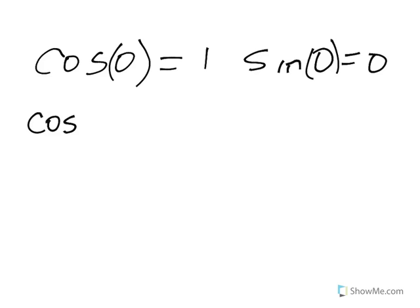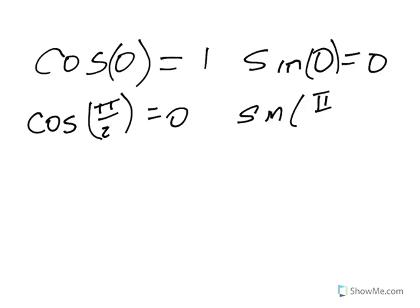The cosine of π over 2 is 0, and the sine of π over 2 is 1.